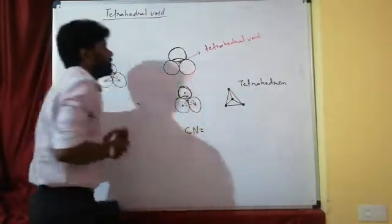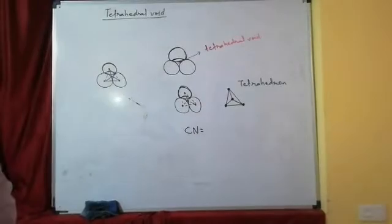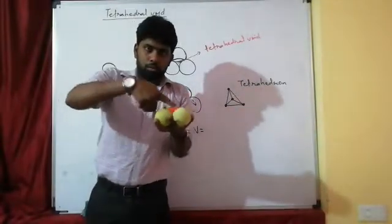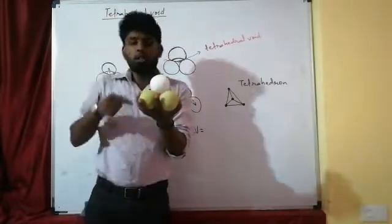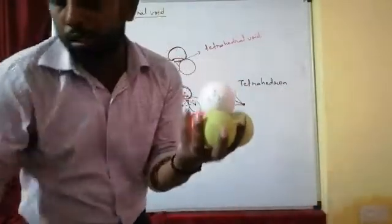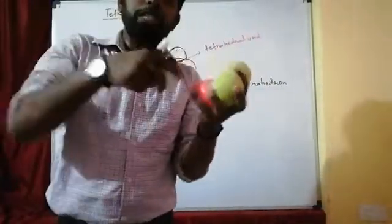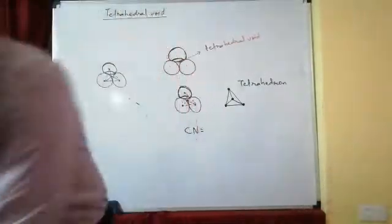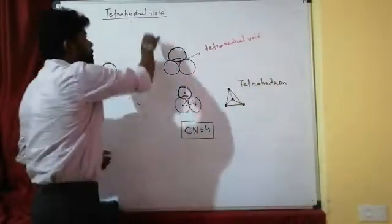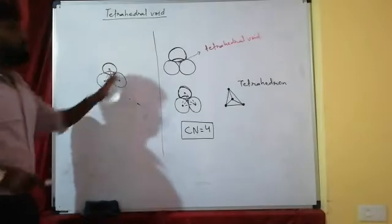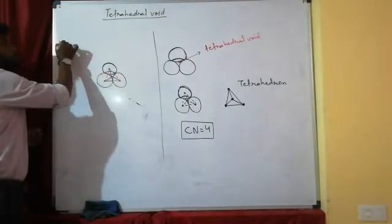What is the coordination number of the tetrahedral void? This void is surrounded by 4 atoms — two front atoms, one back atom, and one atom above. The space which is the tetrahedral void has a coordination number of 4.